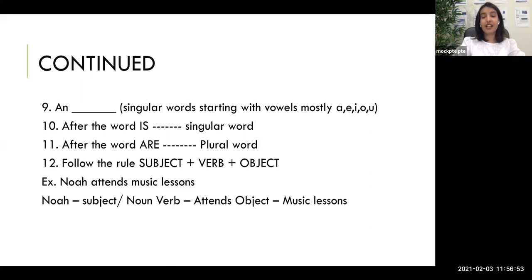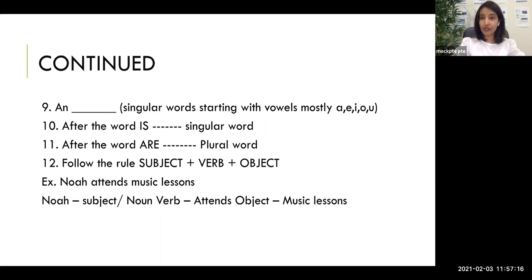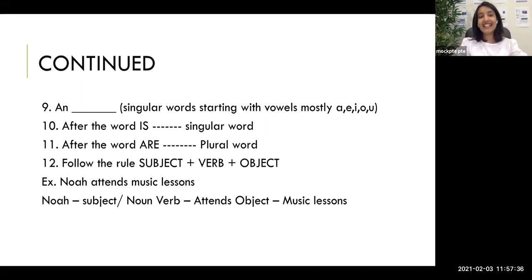The ninth clue: 'an' is an article used for singular countable words starting with a vowel — a, e, i, o, u. So if you see 'an' followed by a blank, choose an option starting with a vowel letter or a vowel sound. For example, 'a university' not 'an university,' because the word 'university' starts with a 'y' sound, not a vowel sound. Use 'an' for words starting with both vowel letters and vowel sounds.